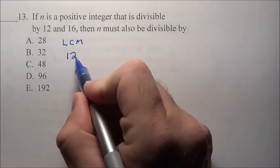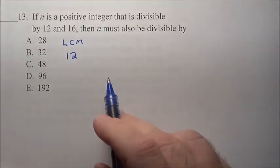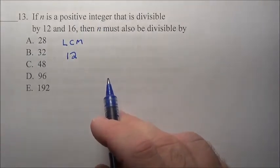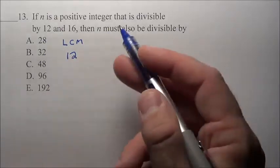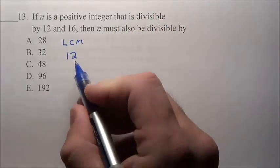So if we look at the multiples of 12, now remember an integer simply is a positive or negative number that doesn't have a fractional part. Obviously we're not dealing with negatives, so it really is just a positive whole number that we're dealing with here.